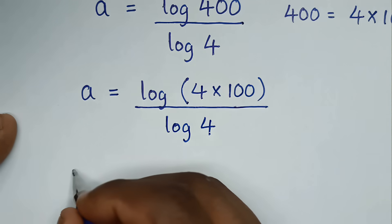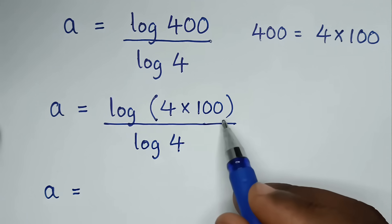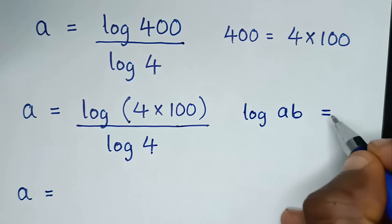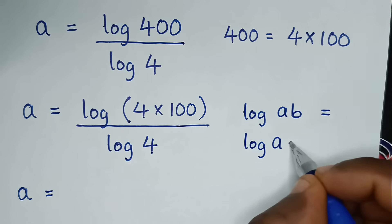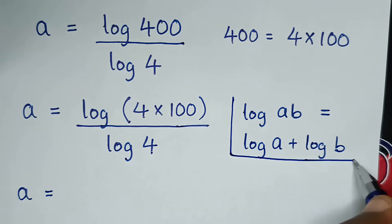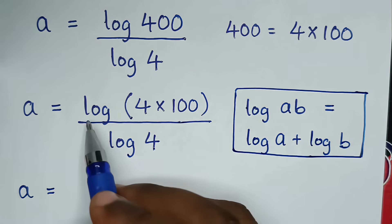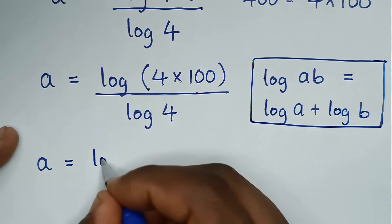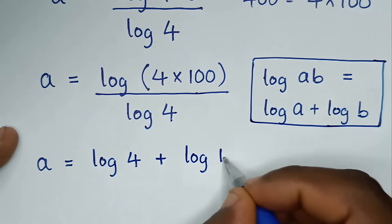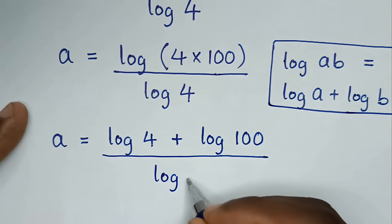Then in the next step, it will be a is equal to log of 4 times 100. This part here is in the form of log of a times b, which is equal to log of a plus log of b. So we will apply this form, and it will be log of 4 plus log of 100, all over log of 4.